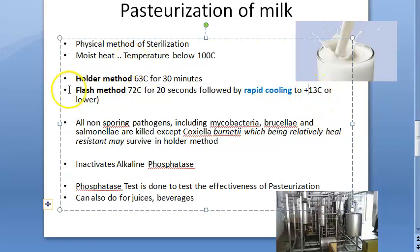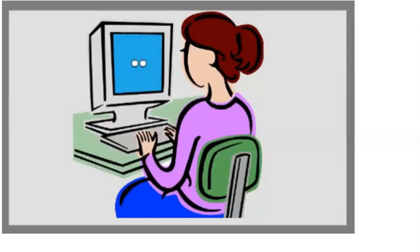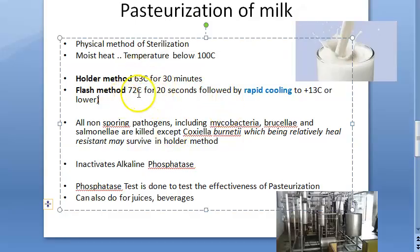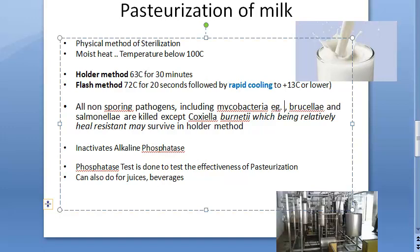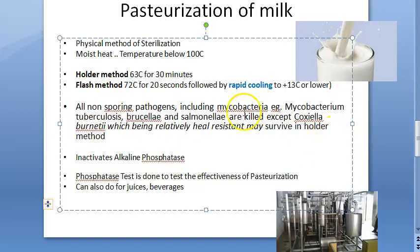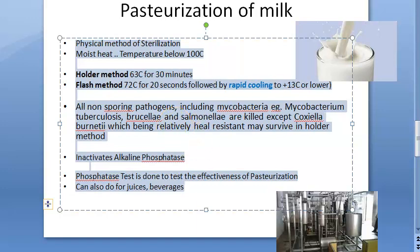To summarize: the holder method is 63 degrees centigrade for 30 minutes, and the flash method is 72 degrees centigrade for 20 seconds, followed by rapid cooling to plus 13 degrees centigrade or lower. The intention is to kill all non-sporing pathogens, including mycobacteria — specifically Mycobacterium tuberculosis — because tuberculosis is prevented through pasteurization.